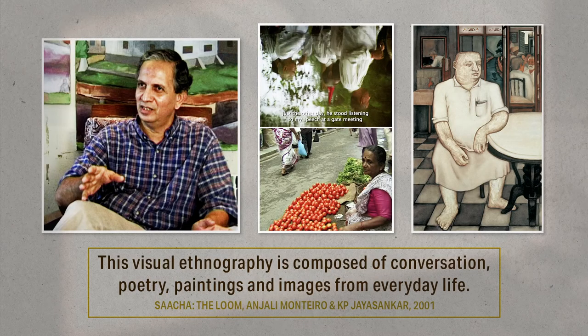The film sequence that we watched is constructed from the words of the artist, the visuals of his paintings, the narrated poem, and scenes from the art gallery and from the vegetable market. These visuals and words carefully stitched together convey meaning. They depict the class differences that mark the city and the everyday experiences of its people, yet they also convey the sense of something common running through their lives — the artist, the poet, the vegetable seller.